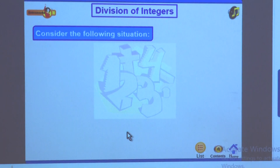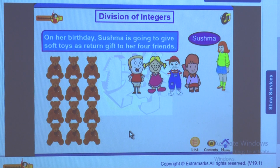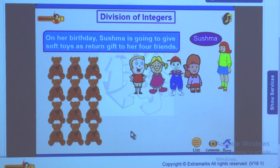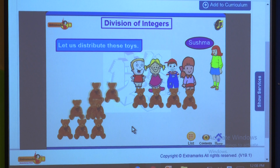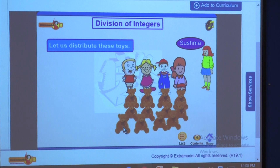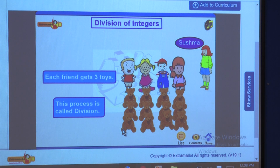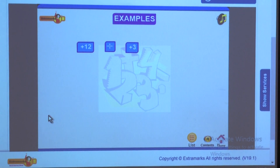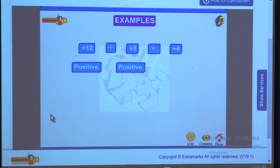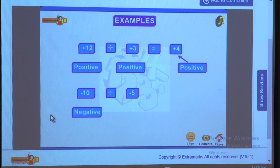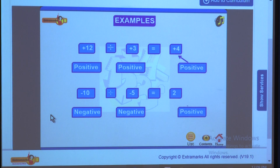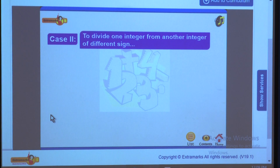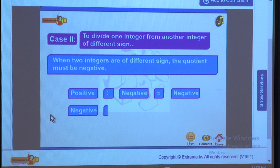Division of integers — consider this situation: Sushma is planning to give soft toys as return gifts to her 4 friends on her birthday. She has 12 toys. Distributing equally, each friend gets 3 toys. This is division: 12 divided by 4 equals 3. Positive 12 divided by positive 3 gives positive 4. Dividing negative 10 by negative 5 gives positive 2. When two integers have different signs, the quotient is negative.